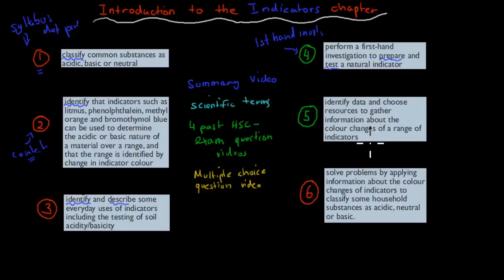Identify data and choose resources to gather information about the color changes range of indicators for the fifth one. And solve problems by applying information about the color changes. So these were the verbs. This basically tells you what you need to know for these dot points.